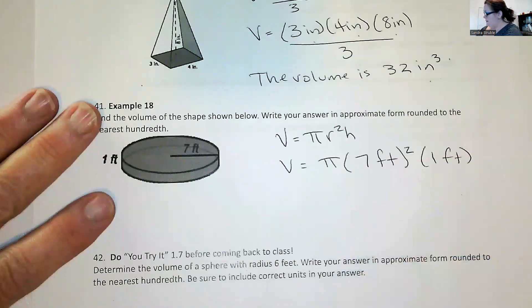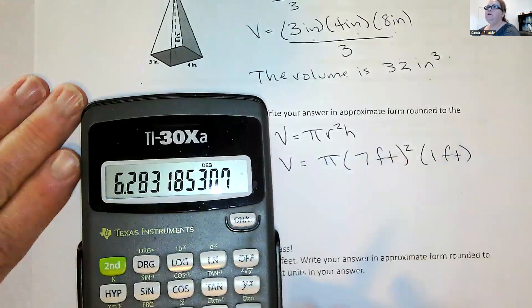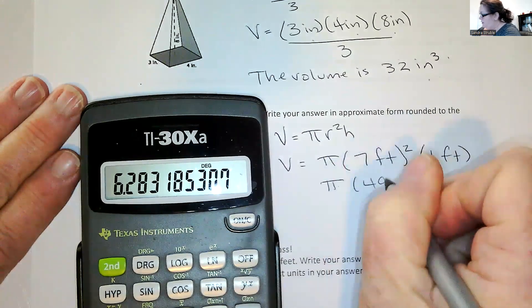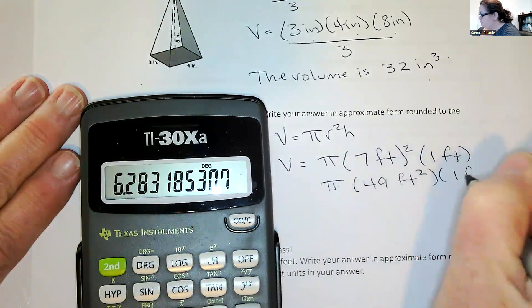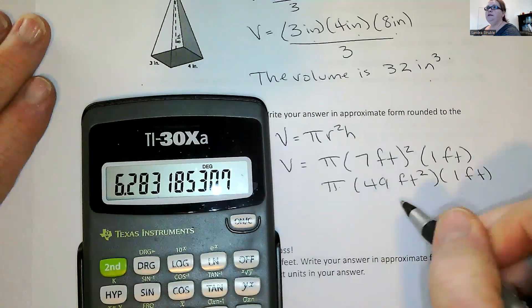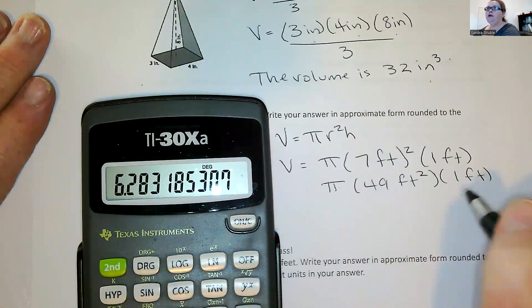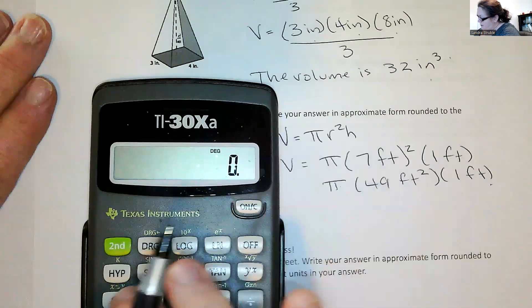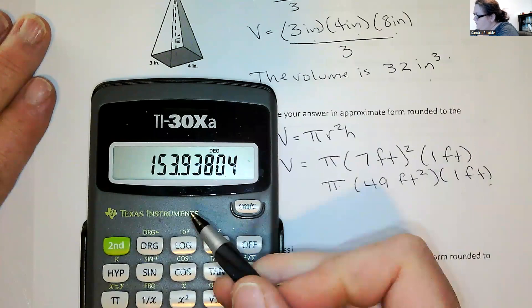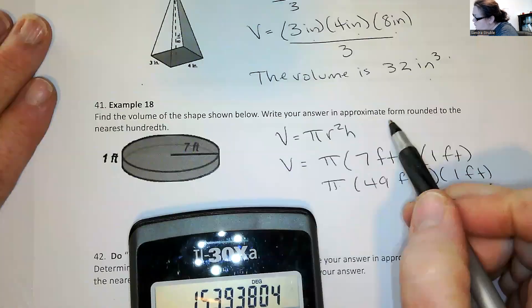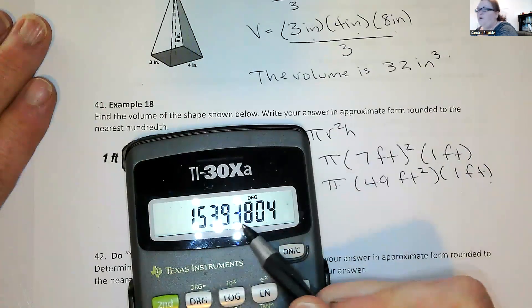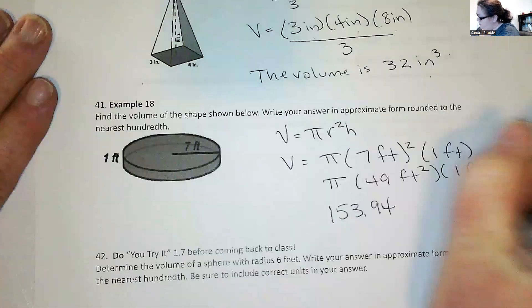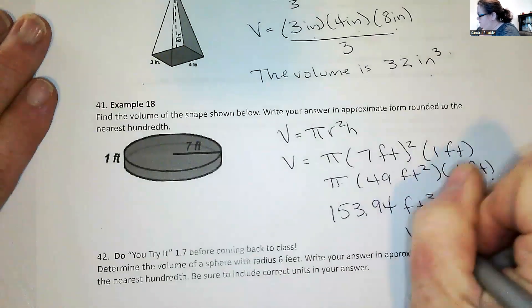So I'm going to take my calculator. Seven squared is just seven with a little carrot and then squared, which is 49. So we've got pi times 49 feet squared times one foot. I haven't removed the one foot. I know one times anything is itself, but I want to make sure that the foot representation is there because foot squared times foot is foot cubed. And you need to understand the volume is measured in cubes. So I'm just going to take my pi times 49 is 153.93. And it says approximate form rounded to the nearest hundredth. So we're going to go to 94.